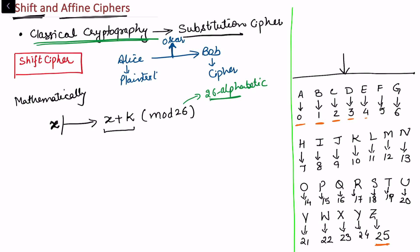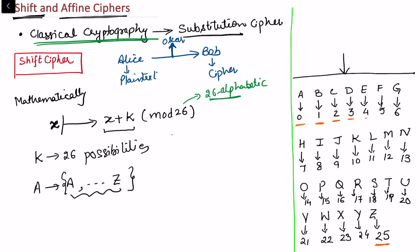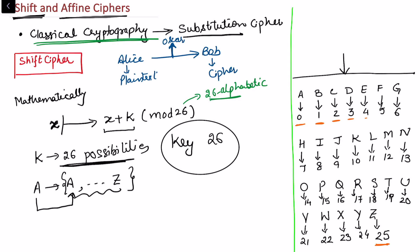For the key k, we have 26 possibilities, because each letter can be replaced by any of the 26 alphabets. For example, A can be replaced by A itself, or by Z, and so on. If A is replaced by A, the plain text remains in the same position — this is the trivial possibility. Excluding that, there are 25 non-trivial possibilities.